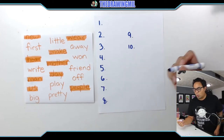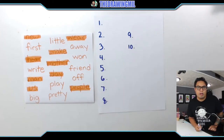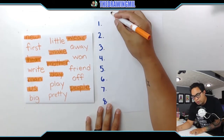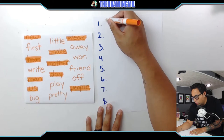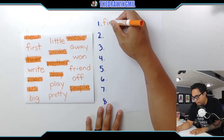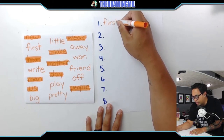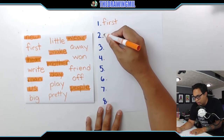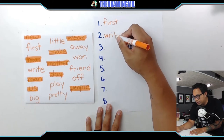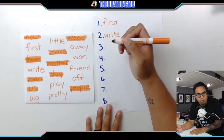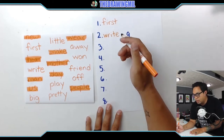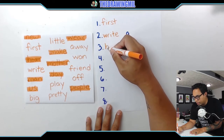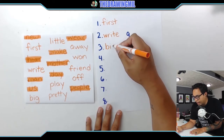Alright, so what we're gonna do is just write down the words so that we're a little bit more familiar with writing them. So let's start off with the first couple words. The first one is "first" - F-I-R-S-T - and I believe that's from week one. Next word is "write" - W-R-I-T-E. So if you're following along with me then great. Next word is "big" - B-I-G.